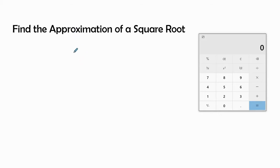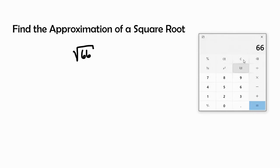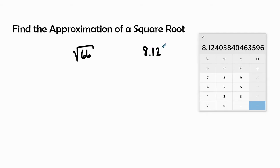Our first square root that we are going to work with is the square root of 66. If I use the square root button on the calculator, we know that it is going to be 8.124 — that's 124 thousandths. I'm just going to go to the thousandths place, and if this number was bigger than 5, I would round up.